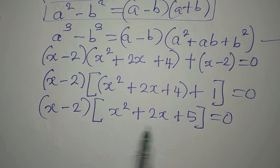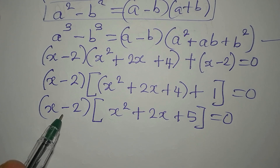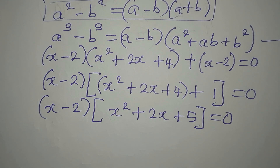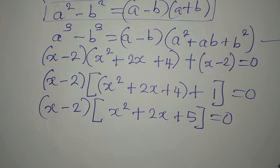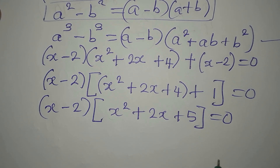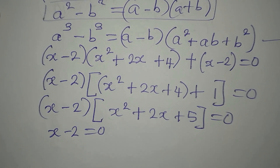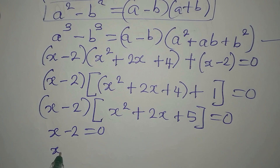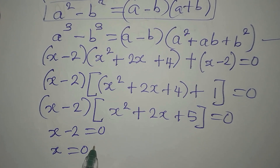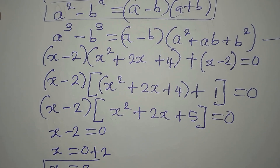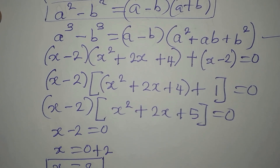We now have two factors. When two terms multiply to give 0, either one equals 0. So we equate X minus 2 equals 0, which gives X equals 2. This is the real solution to the equation.